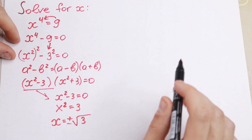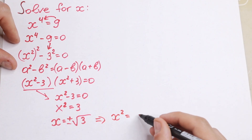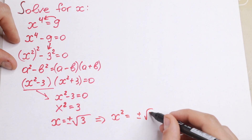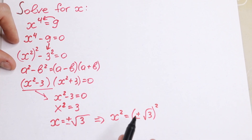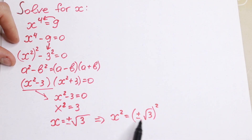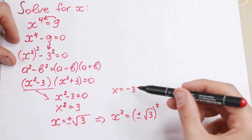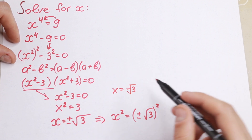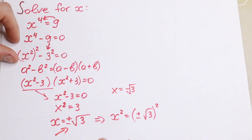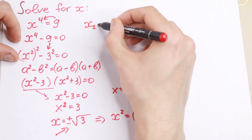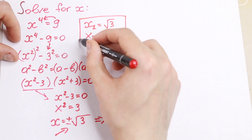Take a look — if we go in reverse, if we raise x equal to plus or minus square root of 3 to the second power, we get x squared equal to 3. But we forget about the minus sign. If x equals minus square root of 3, we raise it to the second power, the minus disappears. So this plus or minus is really necessary. Our x₁ equals square root of 3, and our x₂ equals minus square root of 3. So two real number roots.